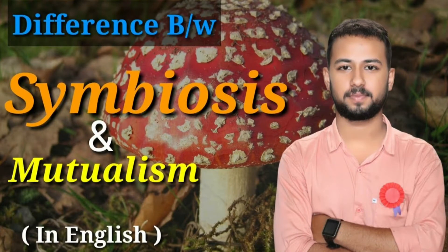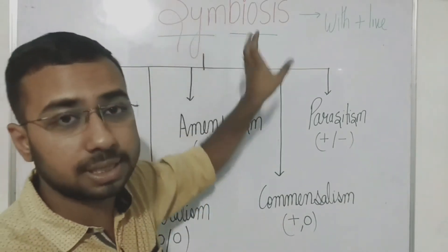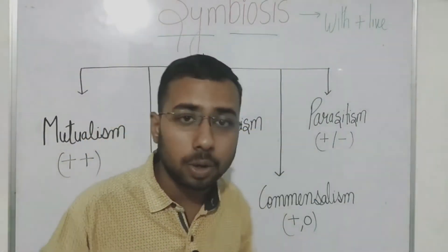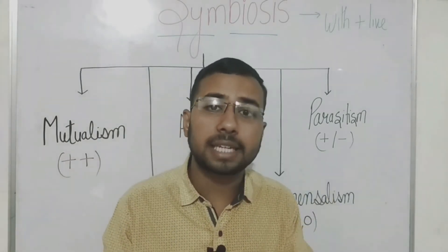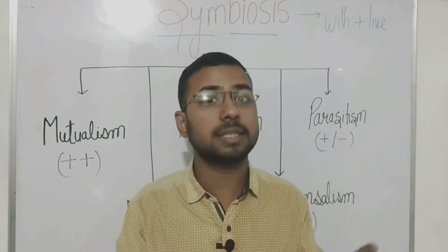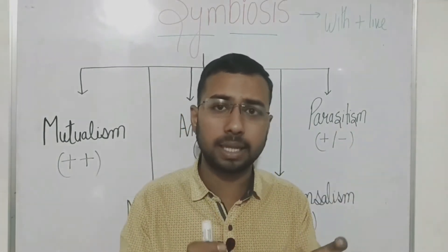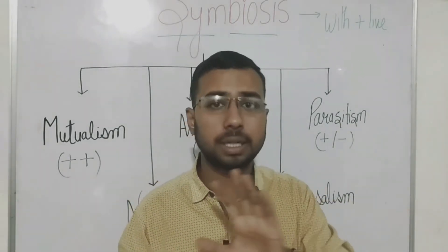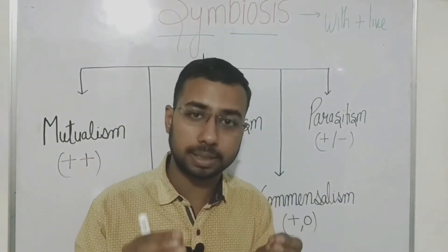Let's start with the word Symbiosis. What does the word Symbiosis mean? Symbiosis is a combination of 'Sym' and 'Biosis' — 'Sym' means 'with' and 'Biosis' means 'live.' So the combination of these words refers to the interaction between two organisms. Here the interaction is not defined — whether the organism is harmful to another, beneficial to another, or neutral.